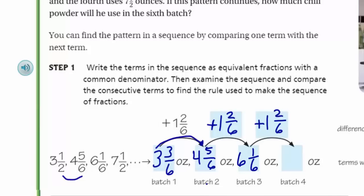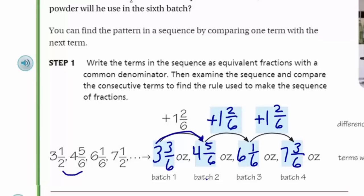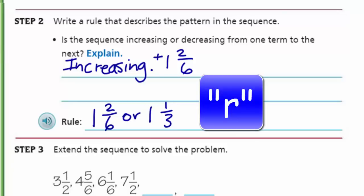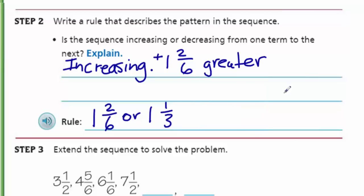Step two says write a rule that describes the pattern in the sequence. Is the sequence increasing, getting larger, or decreasing, getting smaller from one term to the next? Yes, it was increasing. I'm going to write this down here. It was increasing. The rule here would be 1⅙, or 1⅓. Increasing 1⅙ greater than the term before it.